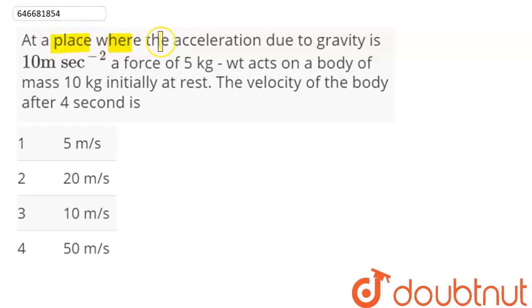Question: At a place where the acceleration due to gravity is 10 meter per second square, a force of 5 kg weight acts on a body of mass 10 kg initially at rest.